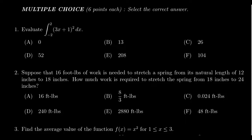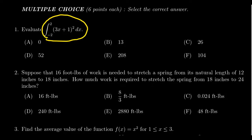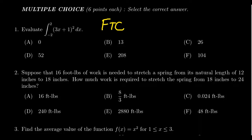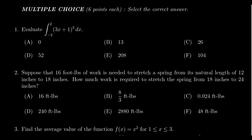In the multiple choice section, there are going to be four questions, each worth six points out of a hundred. You get all six points by selecting the correct answer and none if you don't. Question number one is going to ask you to evaluate a definite integral — something like the integral from negative two to two of (3x + 1) squared. The tool you'll most likely use is the fundamental theorem of calculus, which tells us to find an antiderivative and then evaluate it at the bounds.